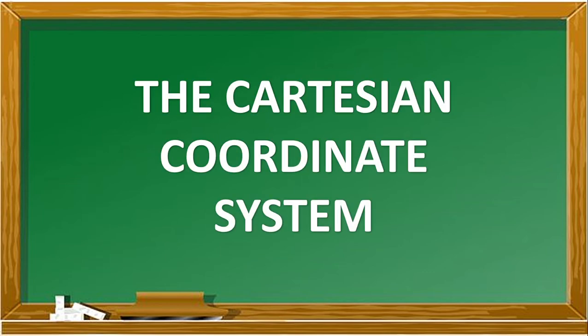Our lesson for today is all about the Cartesian coordinate system. In order to aid people locate specific cities and towns in maps, cartographers use letter and number grids. Mathematicians, on the other hand, use coordinates to locate specific points on a graph.